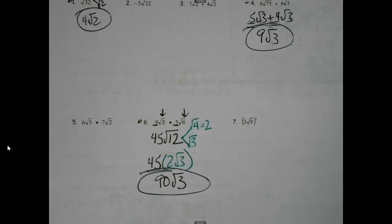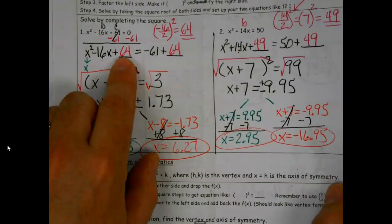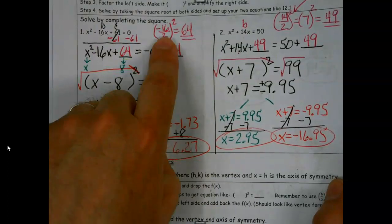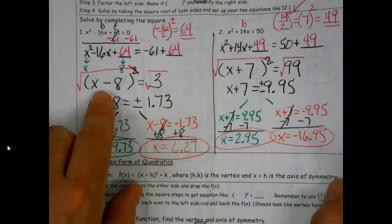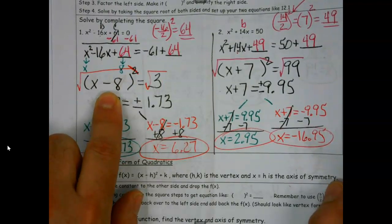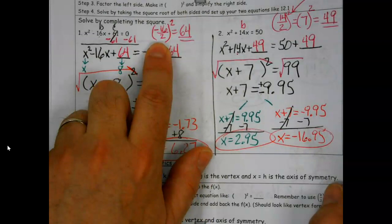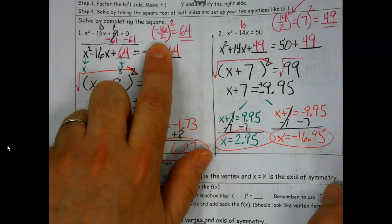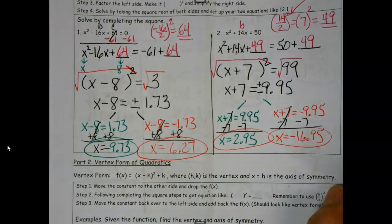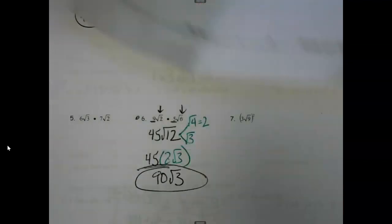Someone's asking: is your blank always going to be positive? Yes. Even if the b is negative, the number in parentheses can be negative, but the number that goes in the blank is always positive - otherwise it messes life up.